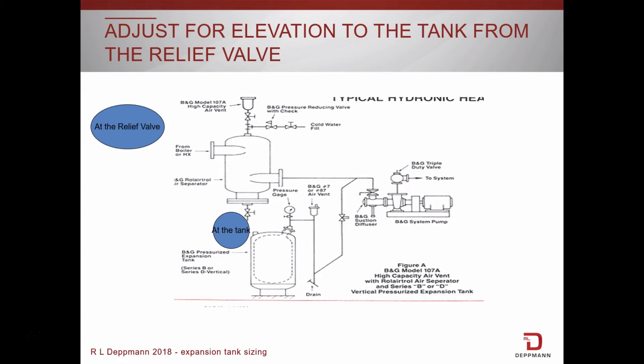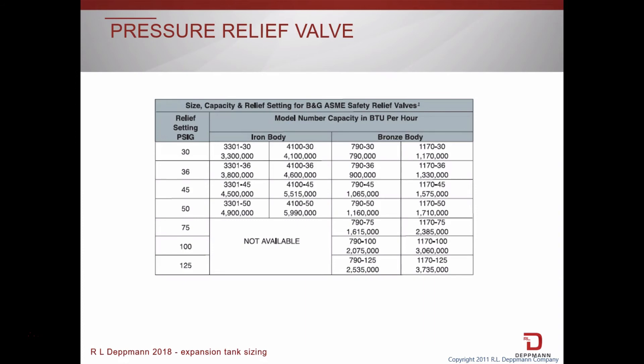So now that we know the pressure setting, how do we select the valve? This chart shows what information we need in order to select the relief valve. We need to know two items: the pressure setting, which we just calculated, and the system capacity. The valve needs to be sized to handle the BTU per hour load of the system. For example, if we determined that we wanted a 50-pound relief valve and our heating system had 4.5 million BTUs per hour worth of boilers, we would need to use the 3301-50 valve. You can see that the bronze body 790 and 1170 valves don't quite get us the capacity we need, and the iron body 4100 is much more than we need.